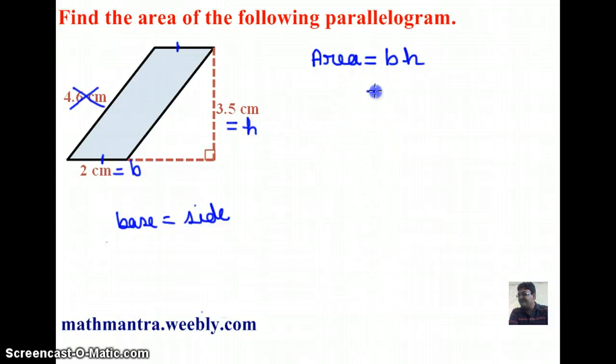Now using this information I'm going to substitute these values here in the formula. I get 2 centimeters times 3.5 centimeters and that gives me 7 centimeters square as the area of the given parallelogram.